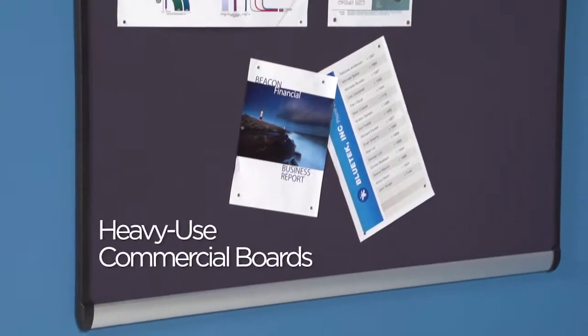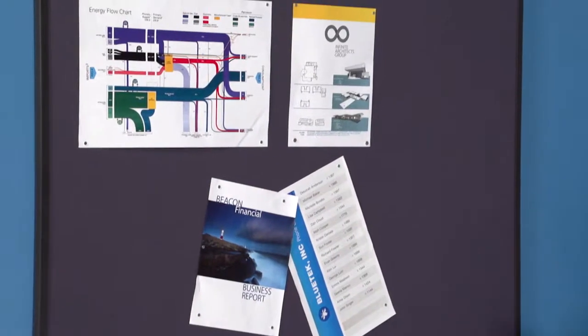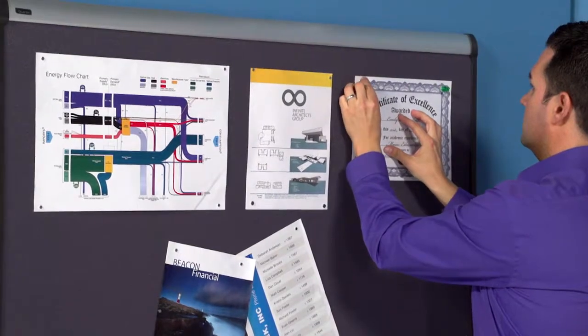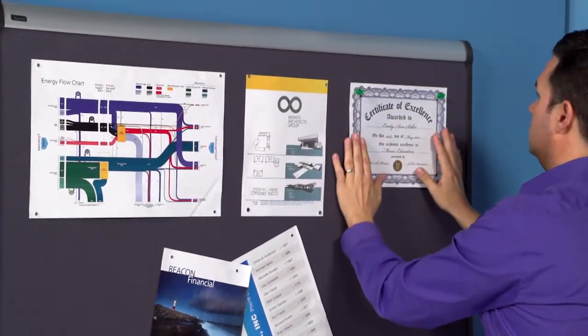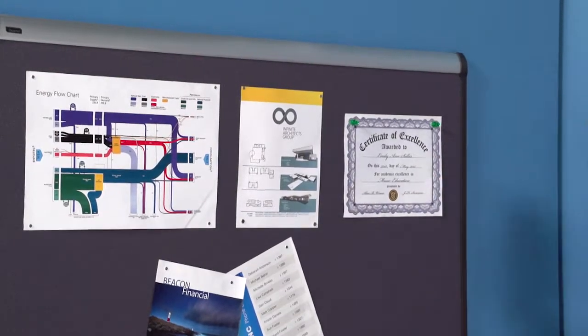Heavy use boards are where design and functionality meet to create unique and engaging presentation areas, like the Quartet Prestige Plus magnetic fabric. They allow you to review and rearrange documents multiple times with traditional pushpins or magnets without causing any damage.